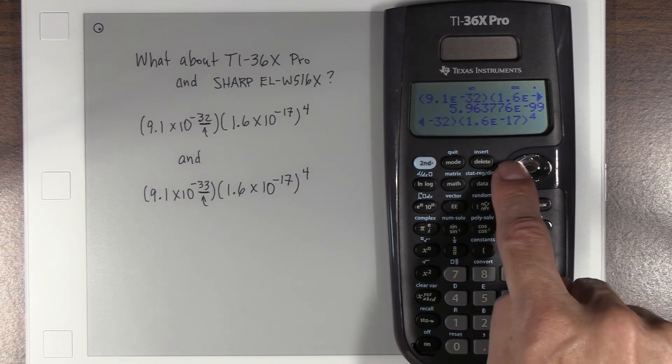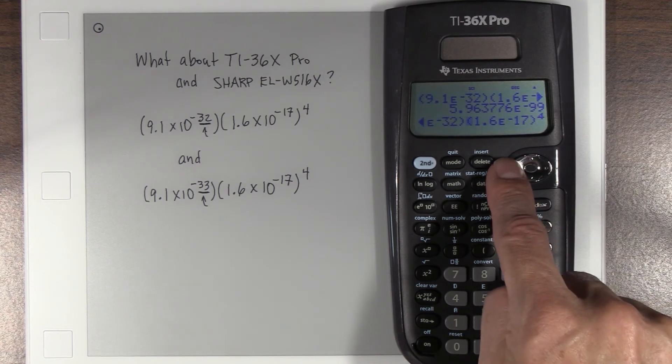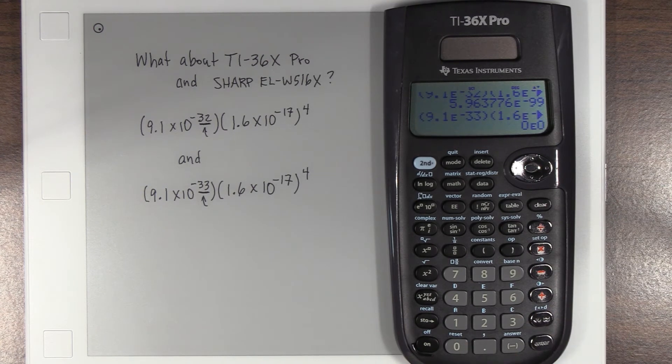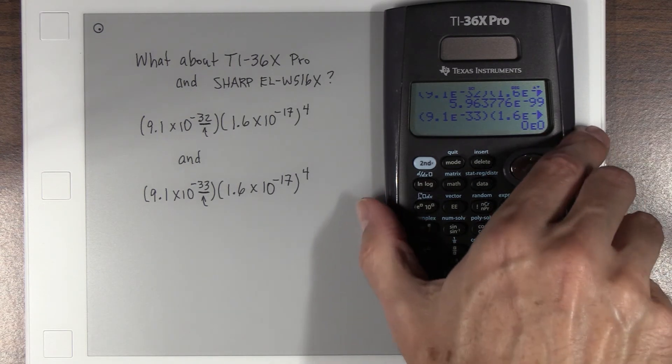And we're going to go up so I don't have to retype the whole thing. We're going to grab that expression. We're going to go here and change the 31, or sorry, the negative 32 to a negative 33, and try it. And ooh, zero, doesn't work. Exactly the same as the Casio.